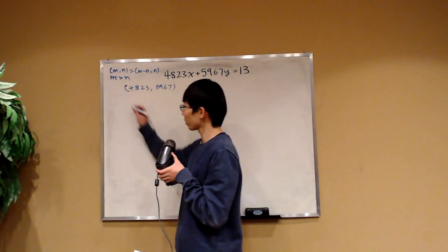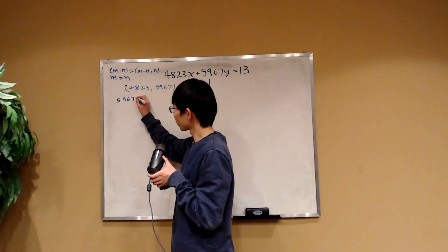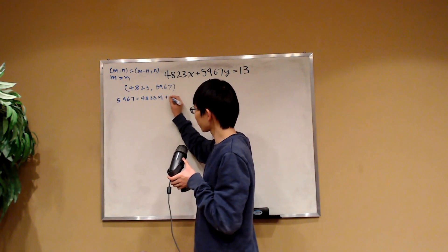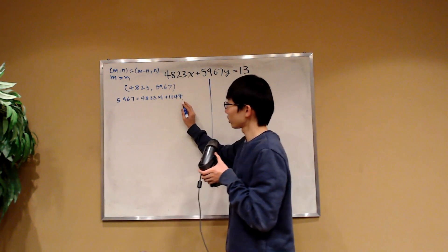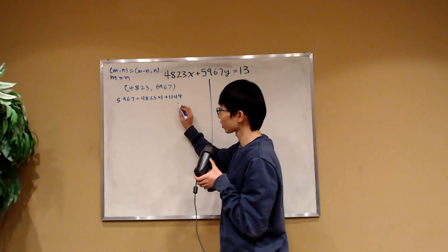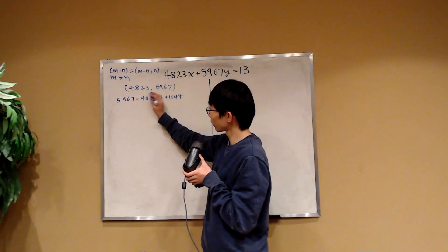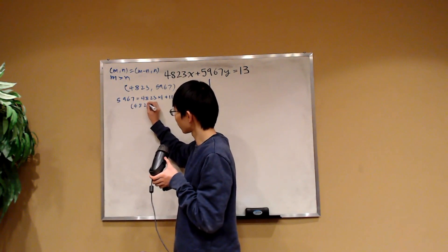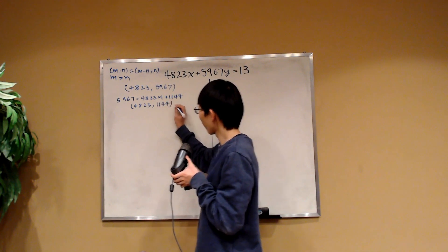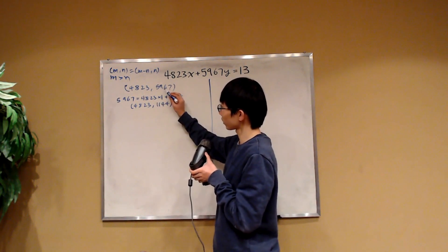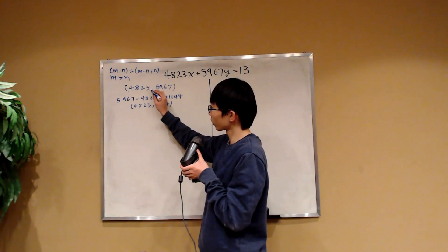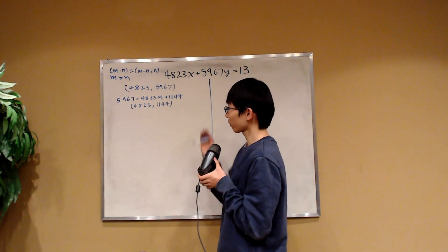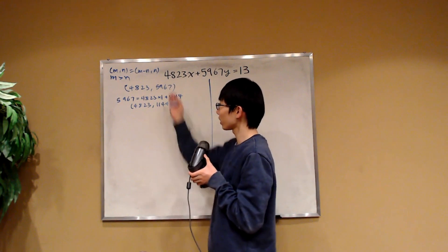First, observe that 5,967 equals 4,823 times 1 plus 1,144. So by the Euclidean algorithm, the greatest common factor of 5,967 and 4,823 is also equal to the greatest common factor of 4,823 and 1,144, because we subtracted 5,967 by 4,823 one time.